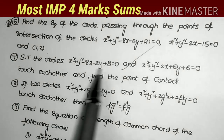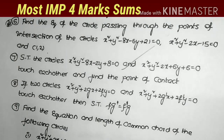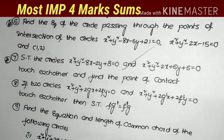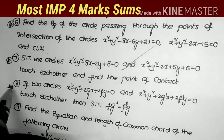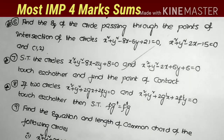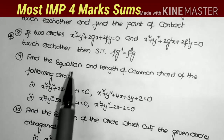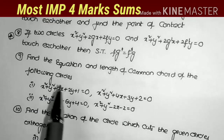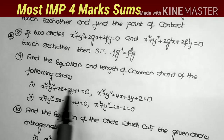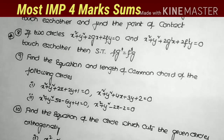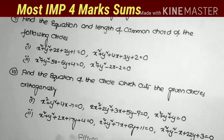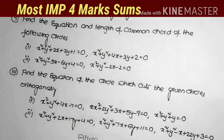Next: show that the circles touch each other and find the point of contact — very important sum. Next: if two circles touch each other, show that f·g' = f'·g — most important sum. Next: find the equation and length of the common chord of two given circles. Last model: find the equation of the circle which cuts the given circles orthogonally. These are the important problems from the system of circles chapter.